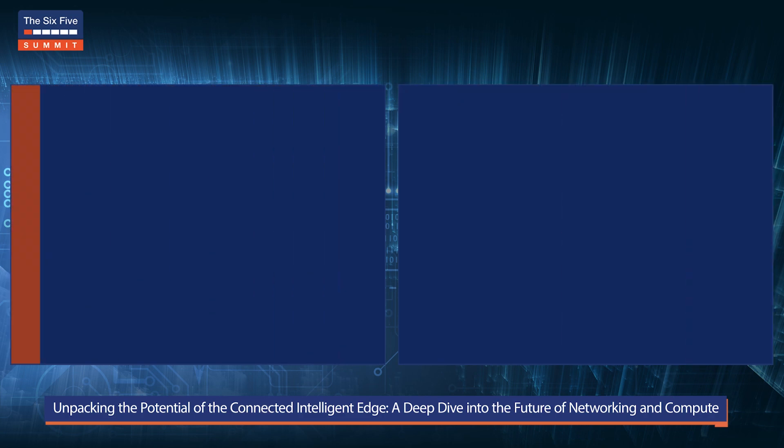Edge compute is really the heart of this intelligent compute or intelligent edge idea, because edge compute helps us strike the right balance of high performance local compute with the scale and efficiency of pure cloud compute. That's how I define and think of this connected intelligent edge. So we were talking about connectivity and mobile edge computing being critical elements. Is one necessarily more important than the other?